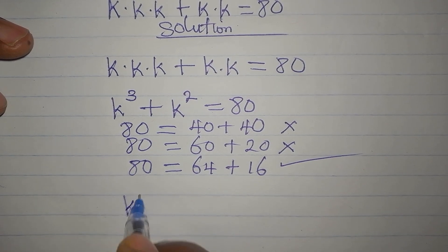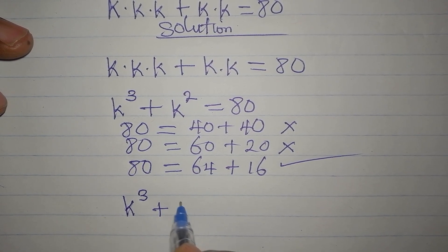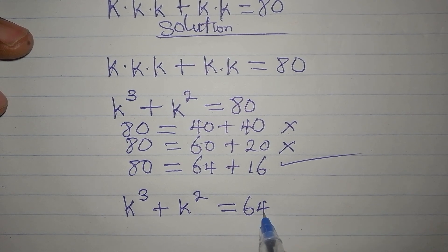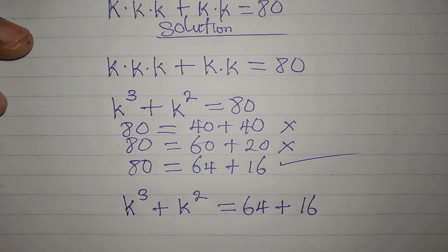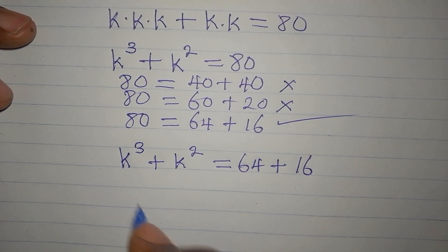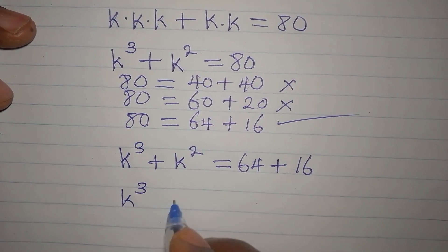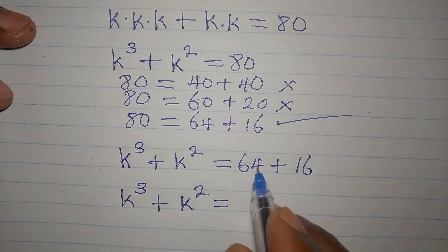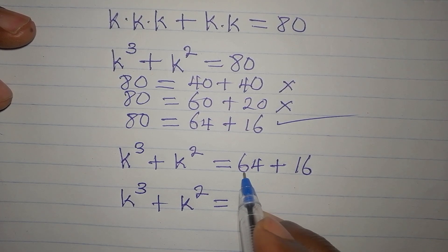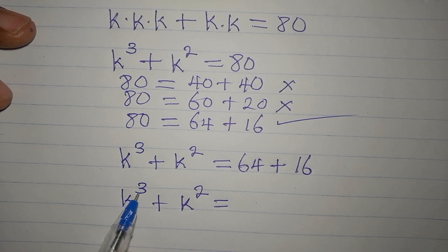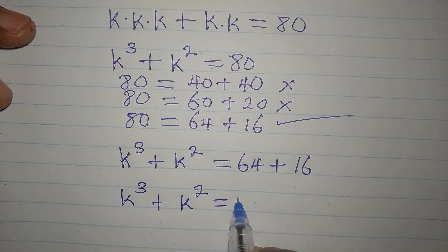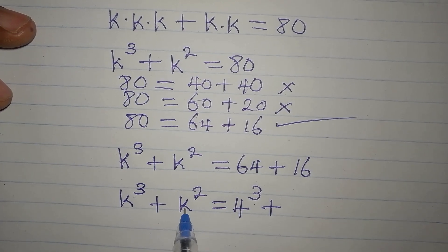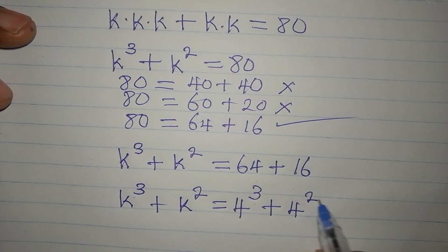So k³ + k² = 64 + 16. Now 64 — rather than writing it as 8 squared, I need something to the power of 3 — so I'll write it as 4 to the power of 3, and then 16 is 4 to the power of 2.